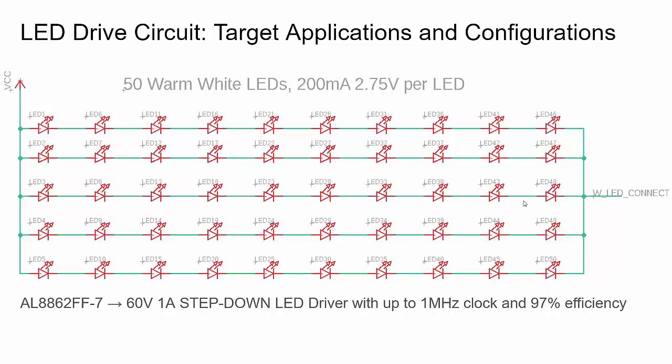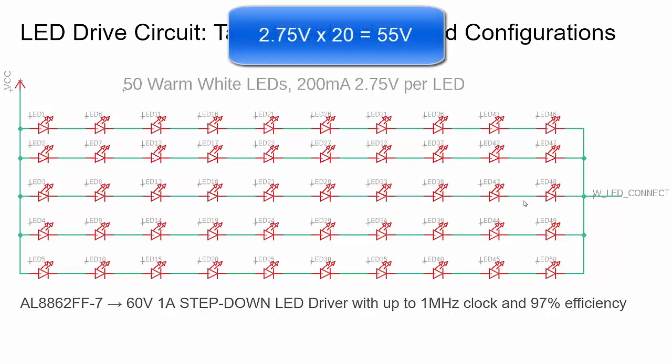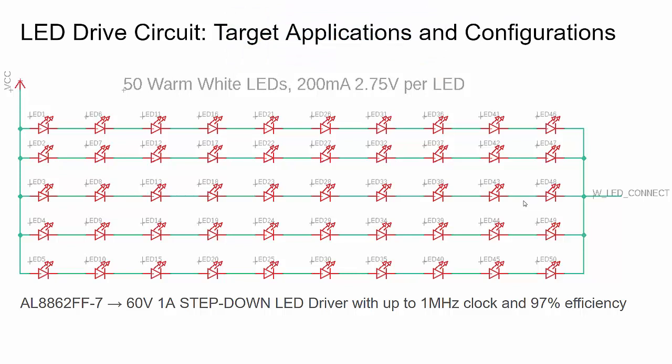As long as we don't have more LEDs in series than would exceed 60 volts, our IC can handle this LED drive. We have 10 columns of five LEDs, so 10 times 2.75 volts is about 27 volts. At 1 amp and 27 volts, our drive circuit can handle this panel. In fact, we could put two panels together — that would be 1 amp at 55 volts — and our circuit can handle that. You could also use higher-power LEDs at 1 amp in a single series string, as long as you stay under 60 volts.